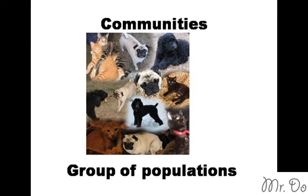When you have a bunch of populations together — like a bunch of cats living with humans, living with dogs, with insects — or in the wild where you have animals living together, different species, different populations, a bunch of populations together makes up a community.